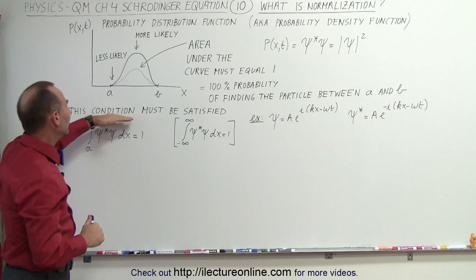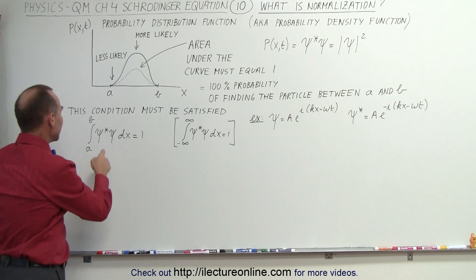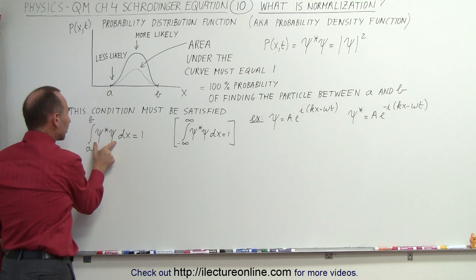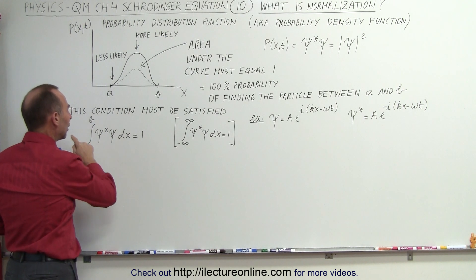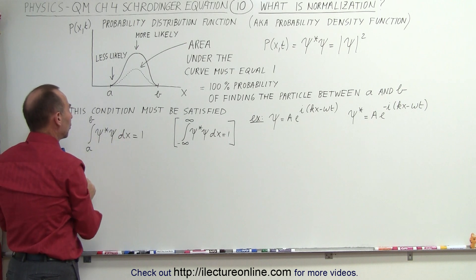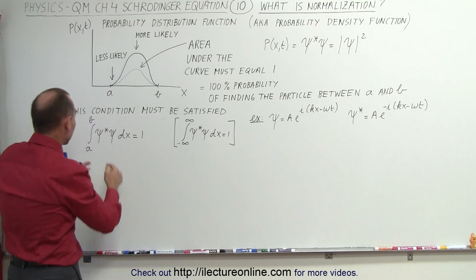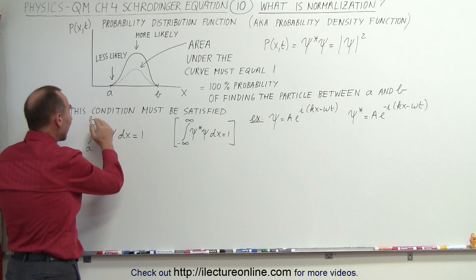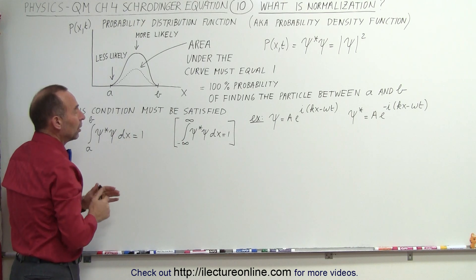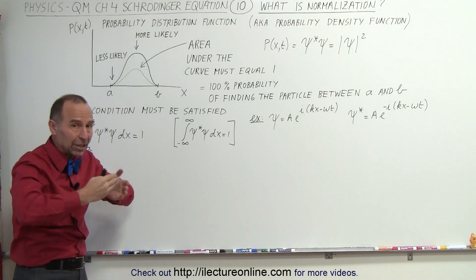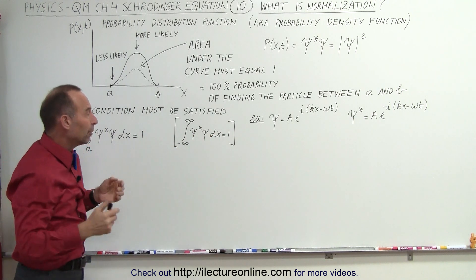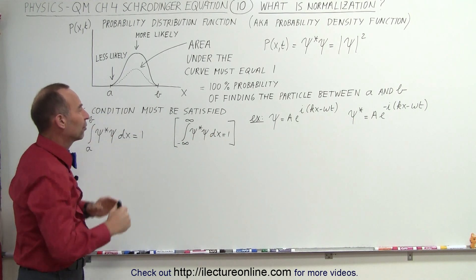So the condition must be satisfied that if we integrate the product of the wave function and its complex conjugate and we integrate it over all the places where it can be, in this particular example it can only be between a and b, that integral should add up to 1. You'll see this expression a lot because they're just saying integrate over all x if it's one dimension or over all space if it's three dimensions.